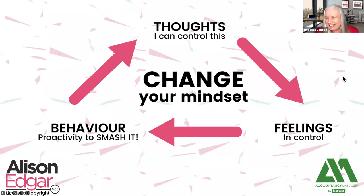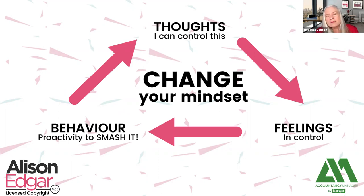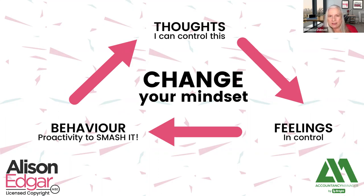Cath mentions she can't remember the last time a client sent books in on time - automation has helped but it's still making hundreds of phone calls. She's started to stop bending over backwards for clients. I've already closed my year end off - the VAT has been submitted and the books are ready to go. It is possible to control your clients - I'm going to explain how.